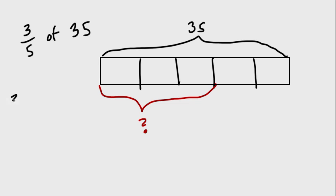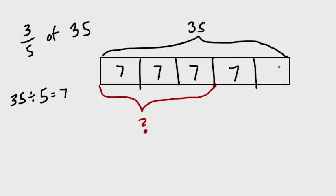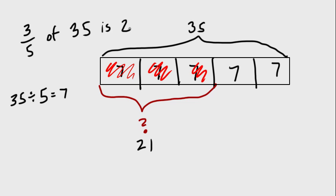Because there are five equal pieces, each one is a fifth. When we divide, that's exactly what we're doing. Because there are five parts, we can divide by five, and that gives us what one part equals. We should all know what 35 divided by five is — that would be seven. So each part is seven. We have three-fifths of it highlighted, which would be 21. So three-fifths of 35 is 21.